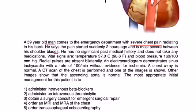Vital signs are a temperature of 96, blood pressure of 160 over 100. Radial pulses are absent bilaterally. An electrocardiogram demonstrates sinus tachycardia with a rate of 100 without evidence for ischemia. Chest x-ray is normal. CT of the chest is performed, and one of the images is shown.